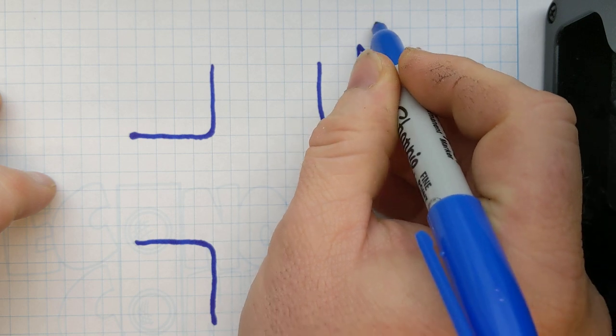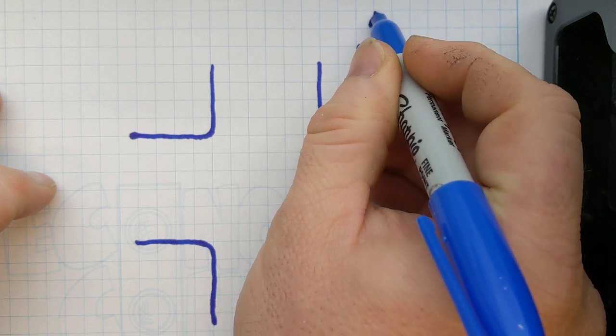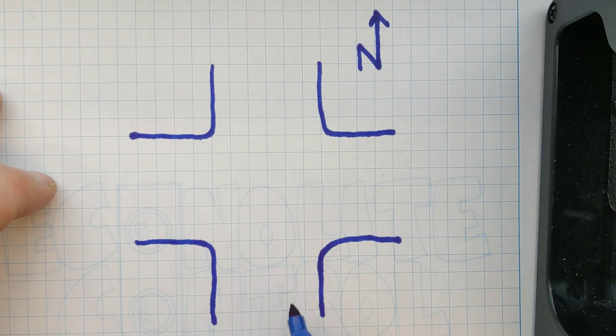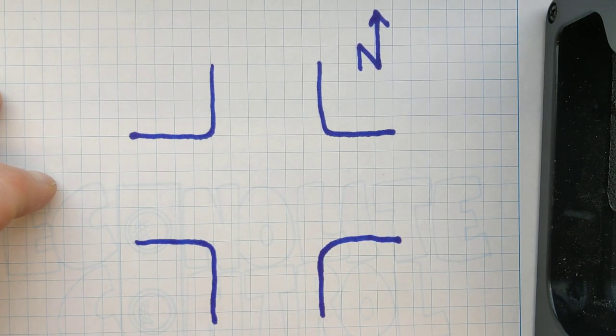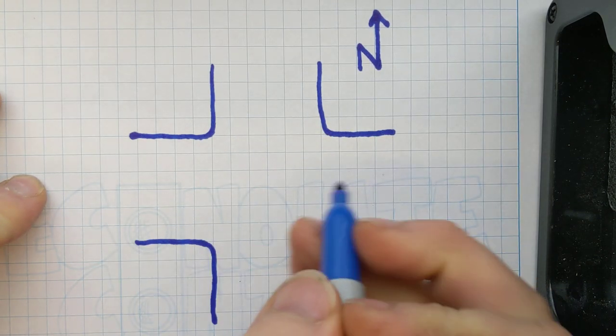Now we're going to need a compass for the intersection. So what we'd like to do is draw an N for north. And so that would indicate that this direction headed that way is northbound. And then, obviously, southbound, eastbound, westbound.